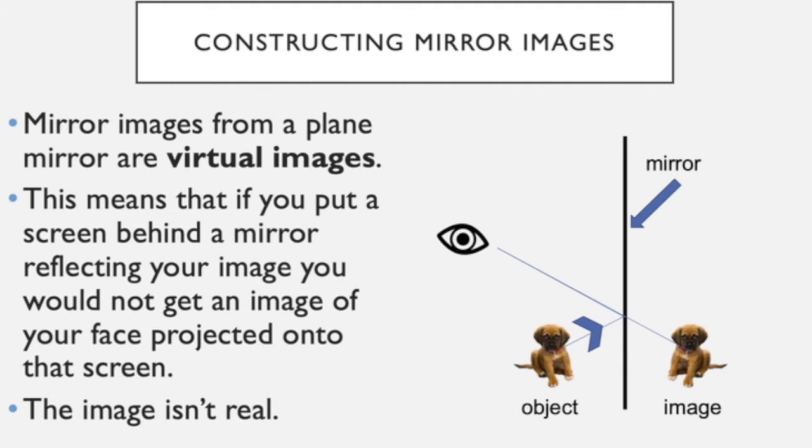The light from the source, say the sun or a light bulb in the room, reflects off the object—in this case the dog—reflects towards the mirror and then towards your eye. When you're drawing these ray diagrams, it's really important to draw straight lines with a ruler and also to include the arrows. The arrows always go away from the object and towards your eye.